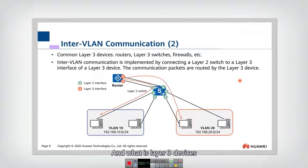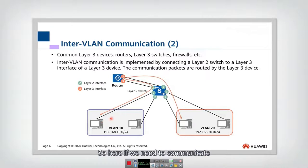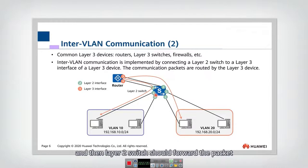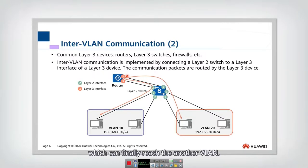What are layer-3 devices? Actually, the router is a typical layer-3 device. Layer-3 switches and firewalls are also layer-3 devices. So if we need to communicate between one computer and another, the traffic should first be transmitted through the layer-2 switch. The layer-2 switch then forwards the packet to the layer-3 router's interface, and the router will send the packet to another interface, which can finally reach the other VLAN.